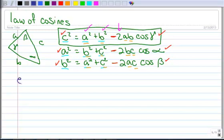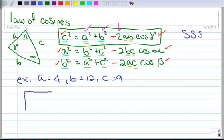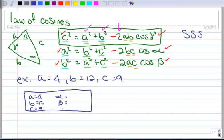So here's an example. I know that a is 4 and b is 12 and c is 9. So you can see right away that I have a side, side, side condition here. And let's go ahead and make our box. All right, so a is 4, b is 12, c is 9, alpha is unknown, beta is unknown, and gamma is unknown.